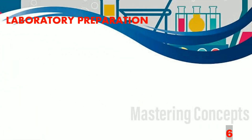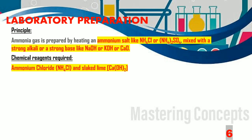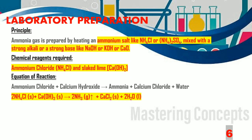Let us now move on to the laboratory preparation of ammonia gas. For preparing ammonia gas, we heat a mixture of an ammonium salt like ammonium chloride or ammonium sulphate with a strong alkali or base like sodium hydroxide, potassium hydroxide, or calcium oxide. The chemicals taken here are ammonium chloride (NH4Cl) and slaked lime or calcium hydroxide (Ca(OH)2). The products formed are ammonia gas, calcium chloride, and water. The balanced reaction is: 2NH4Cl + Ca(OH)2 → 2NH3 + CaCl2 + 2H2O.